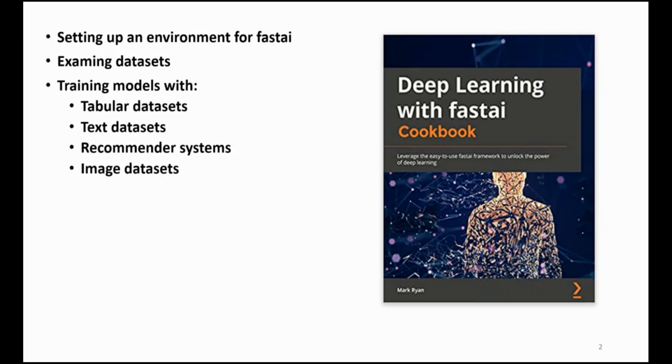Next, you will create deep learning models that represent the four application areas supported by Fast AI: Tabular, Text, Recommender Systems and Image. You will build and train models for each of these areas using two classes of datasets: the curated datasets provided by Fast AI and standalone datasets.